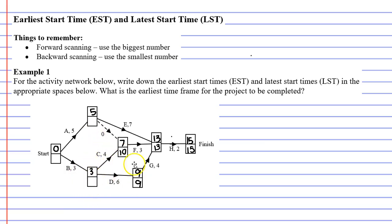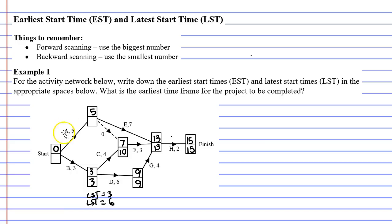For the next vertex there are two different paths using backward scanning. Going one path: 9 minus 6 gives a possible latest start time of 3. The other path: 10 minus 4 gives a possible latest start time of 6. With backward scanning we use the smallest number, so we use 3. Why? If we had put 6, then 6 plus 6 would have given 12 instead of 9, and putting 12 there would have delayed the project beyond the 15-hour mark.